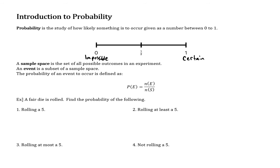Something with a probability of 0 would be like rolling a 10 on a single fair die, or the probability that a pig will fly to the moon. So that's 0 as well — those are the endpoints of our probability scale.